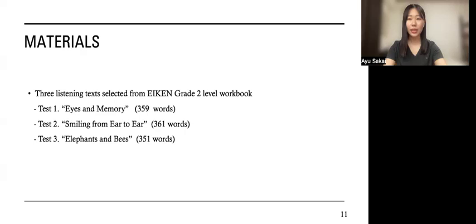Materials I used in this research were selected from EIKEN Grade 2 level workbook. This test consisted of three listening texts. Three passages were about 360 word lengths. The first passage was about a research which found that moving the eyes from side to side improves both recall and recognition memory. The second passage was about a study which revealed that people can tell if speakers are smiling or not, even without seeing their faces. The third passage was about a study where scientists discovered elephants are afraid of bees.